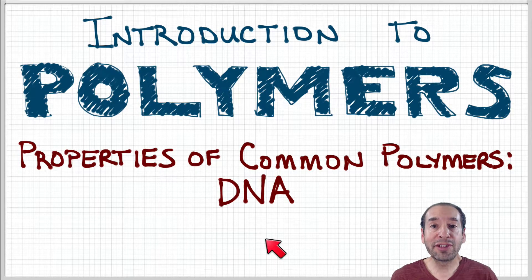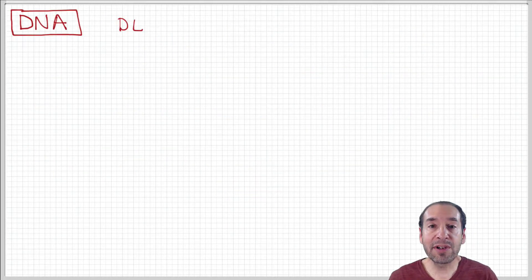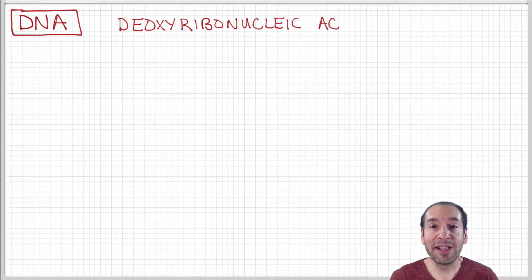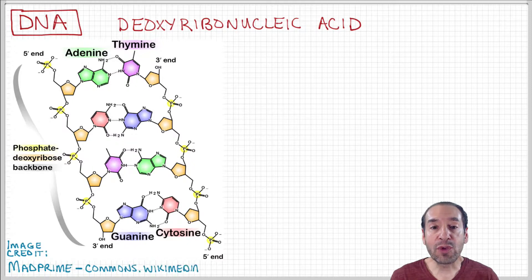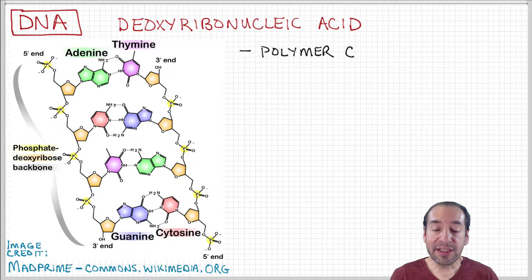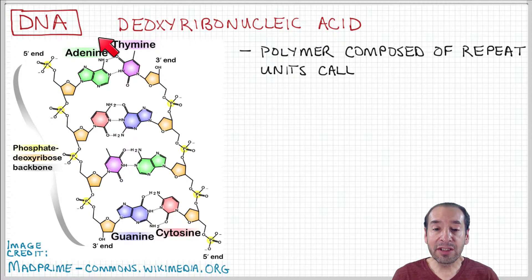Another material I'd like to talk about is DNA. DNA is something that we may not think about as a polymer in the sense that it's not a consumer product, but it is a polymer and it's actually very important because without DNA, life as we know it wouldn't exist. DNA stands for deoxyribonucleic acid.